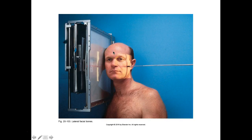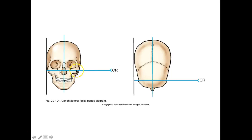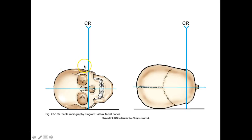Make sure you don't clip off the frontal sinus — it's really important that we actually see it when shooting facial bones. At the level of the zygomatic bone, you're going to be between the outer canthus and the EAM. You've got your MSP perpendicular and your IPL perpendicular.